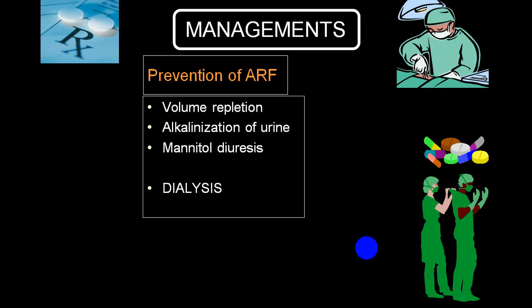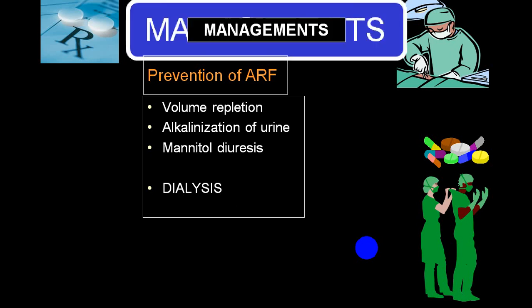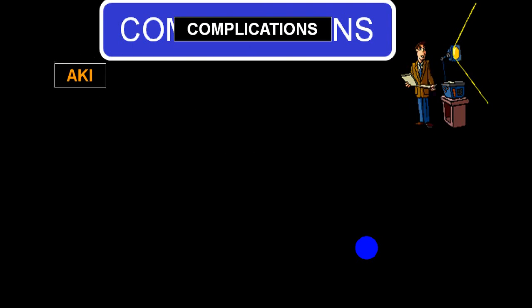Whenever you get hemoglobinuria, treatment focuses on prevention of AKI, because hemoglobin will block those micro blood vessels and produce AKI. For prevention of AKI in the presence of hemoglobinuria, you must replace the volume. With volume repletion, make the urine alkaline by giving alkalizers, and you can give mannitol or diuretics. If that does not give good results, you can go for dialysis.